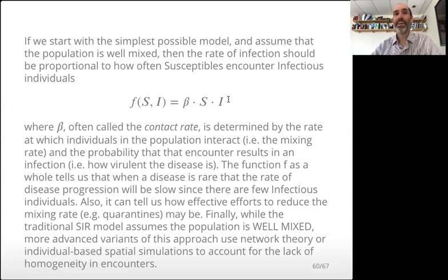So the transmission rate depends on the inherent biology of the organism, the disease, but also a lot on what you can do to slow the rate at which people come into contact with each other.